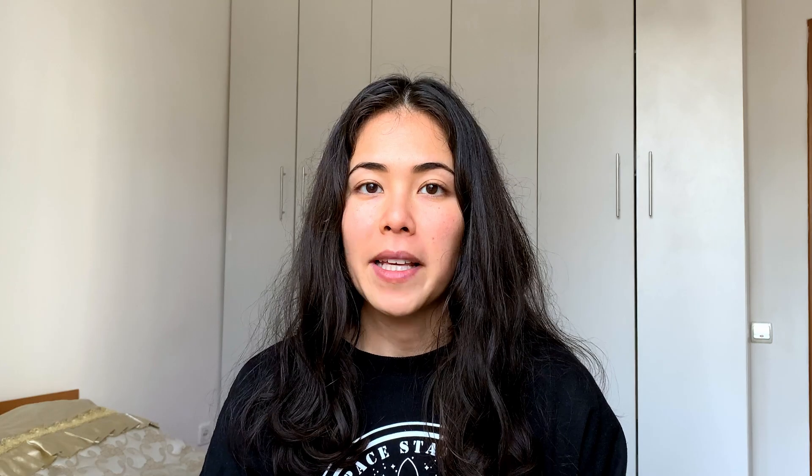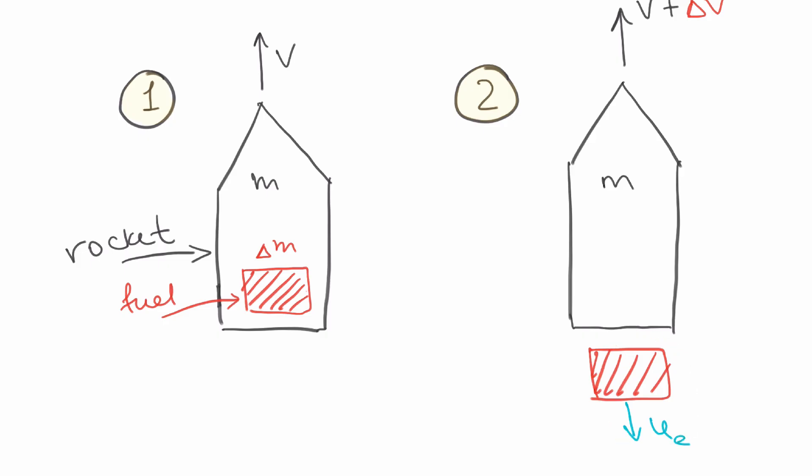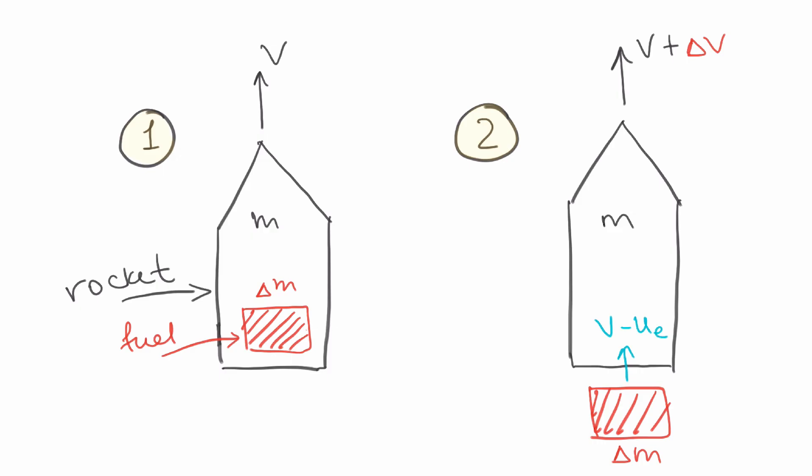After burning, the rocket now moves with a higher velocity v plus delta-v. Burning the fuel gave us an additional boost called delta-v. We also need to note that when the fuel exits the rocket it has some exhaust velocity, which we call u_e or u-exhaust. If we zoom out and consider the fuel relative to Earth: the fuel exits the rocket at speed u_e relative to the rocket, but since the rocket is moving upward, the fuel's velocity relative to Earth is v minus u_e.